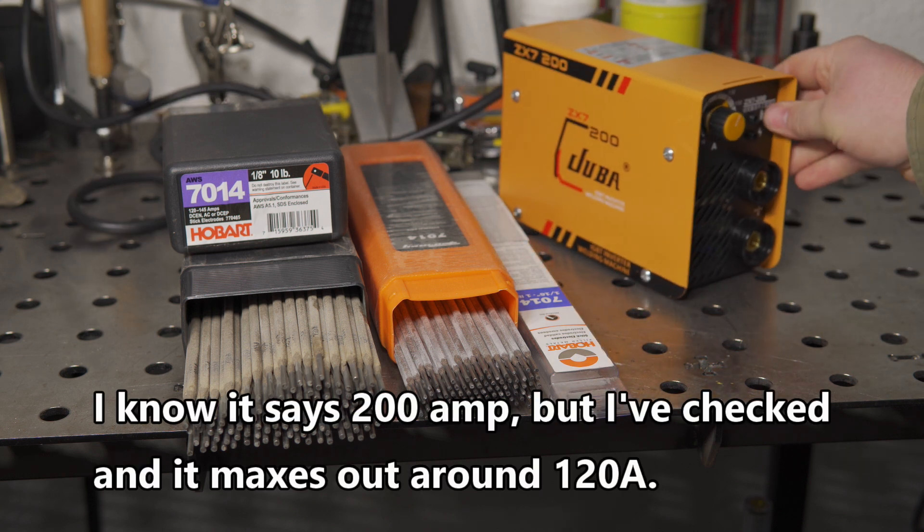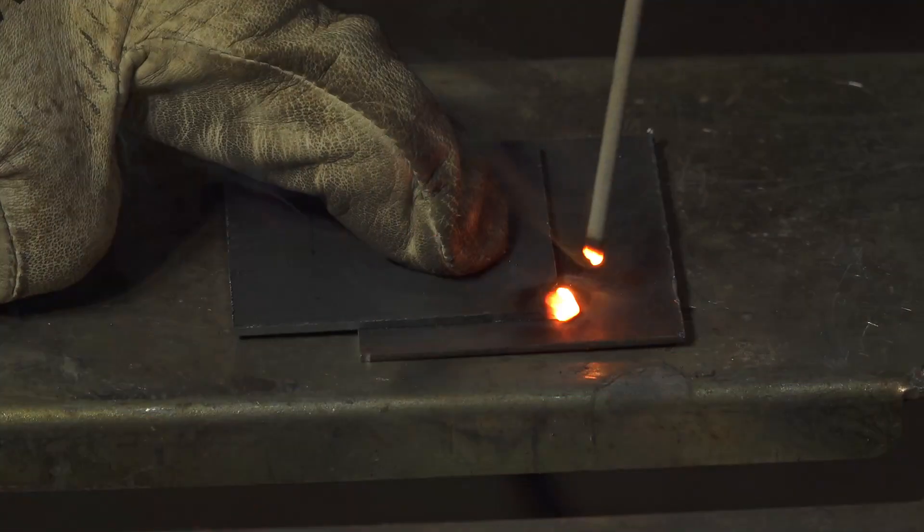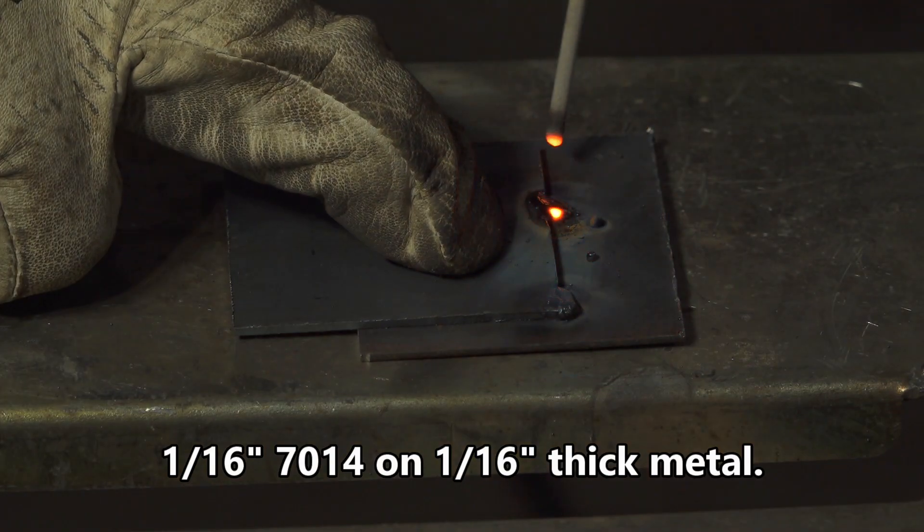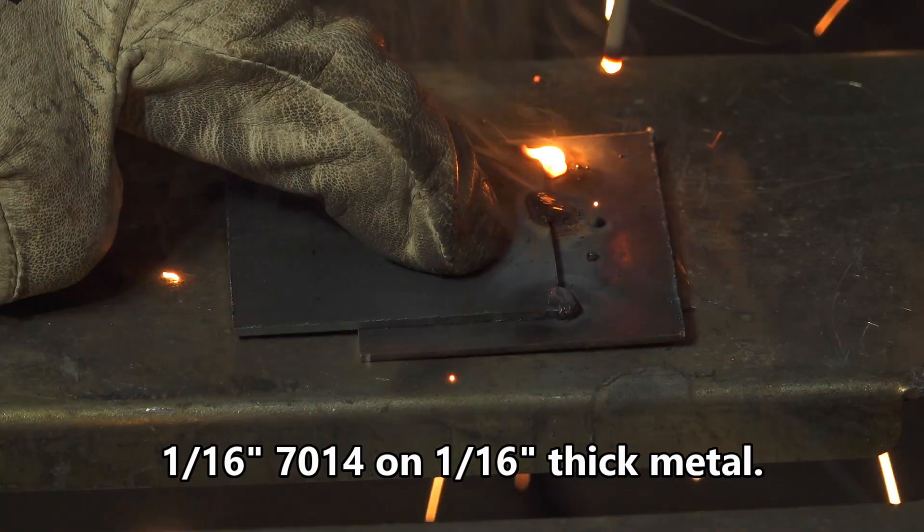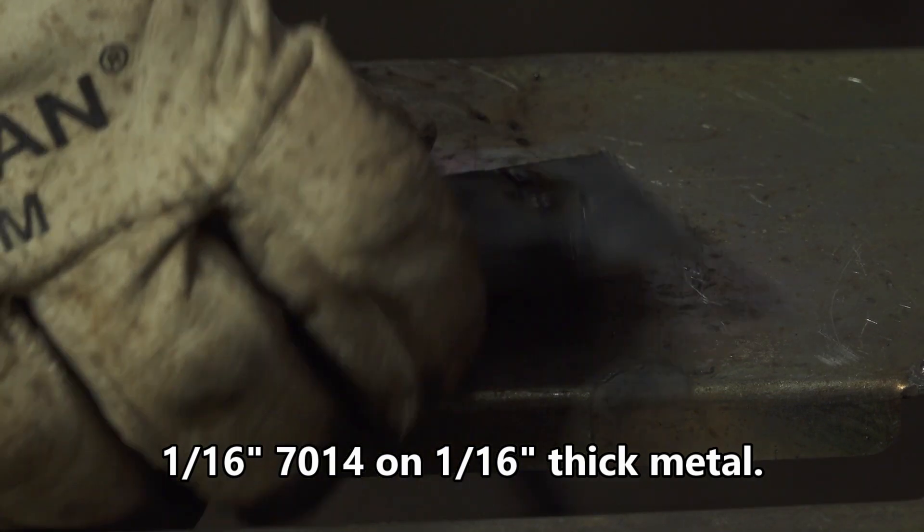But getting back to the topic at hand, I really like 7014 rods. I think it's a decent general use rod that's pretty easy to run. It has a fairly heavy layer of slag while welding that makes the puddle difficult to see, but you can just drag the rod so it's still pretty easy to run.